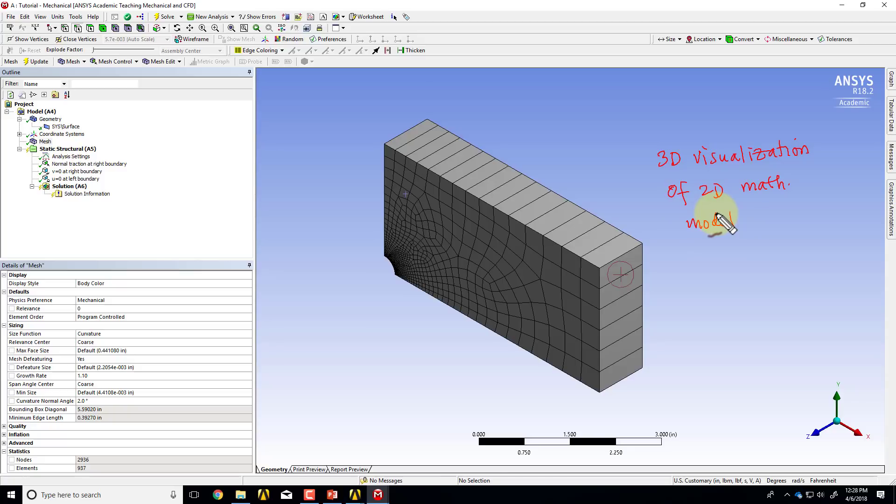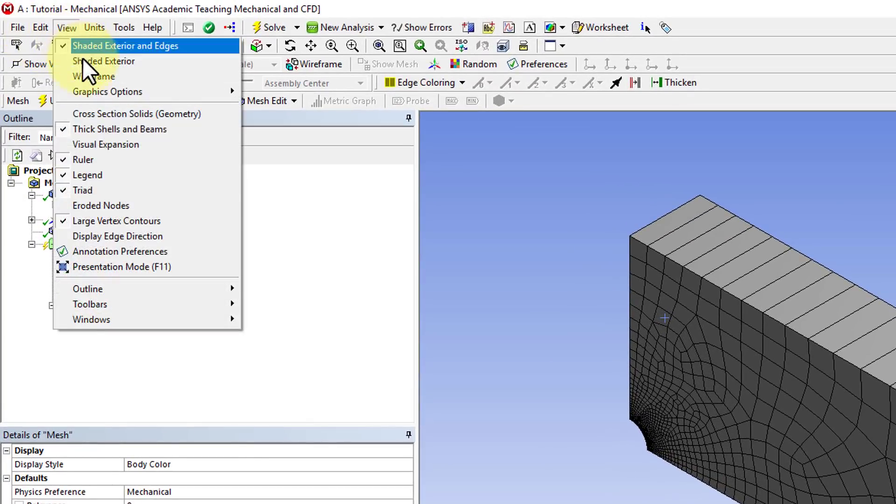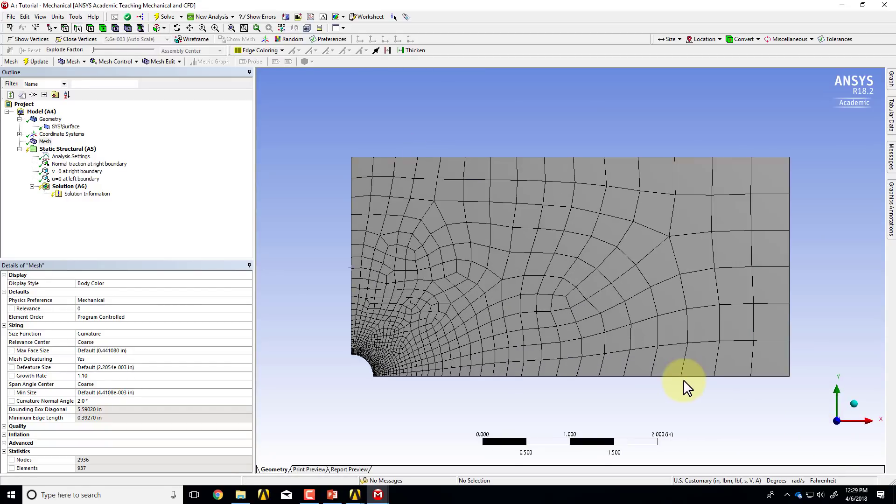So the way you need to think about this is 3D visualization of 2D math model. And in fact, here the visualization is not necessary, so I can just turn it off. I can come here and say view and turn off thick shells and beams. So it turns off that visualization, and I can look along Z and over here.